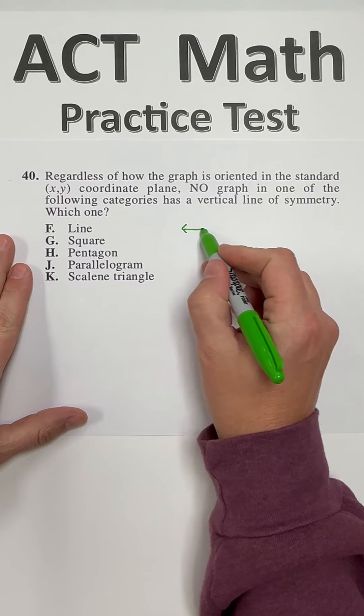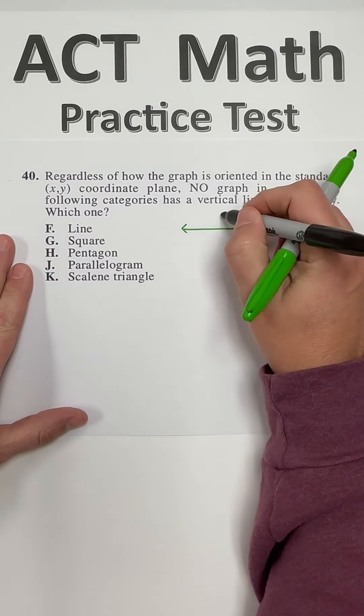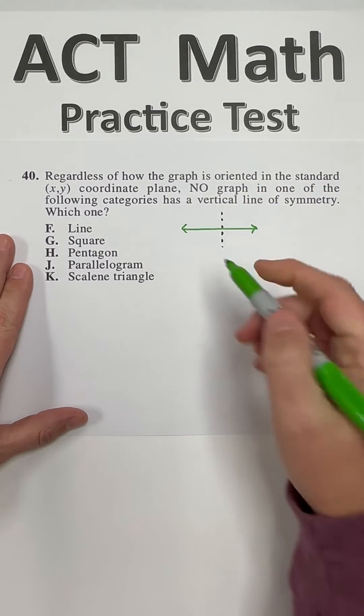So like if I draw a line, just a straight horizontal line, there is a vertical line of symmetry that would cut that in half.